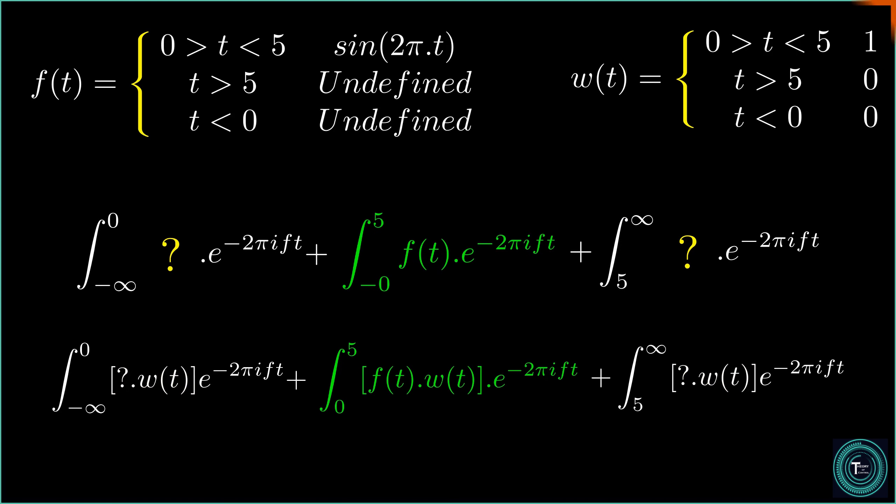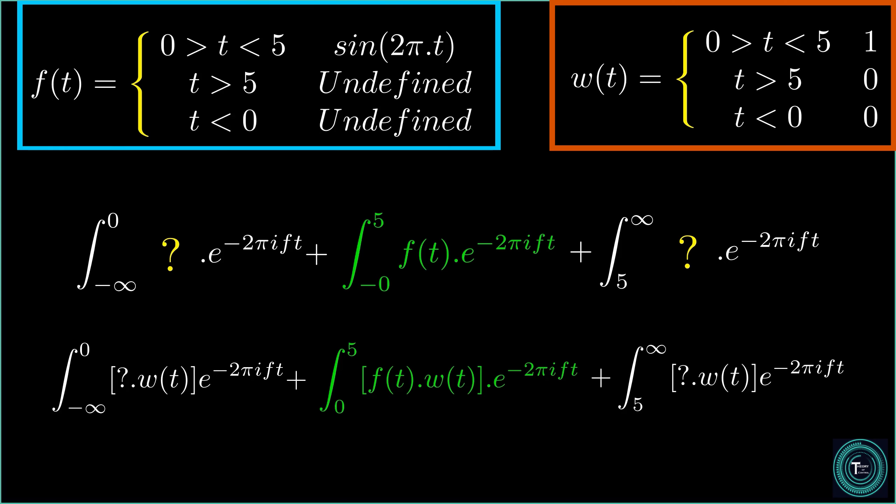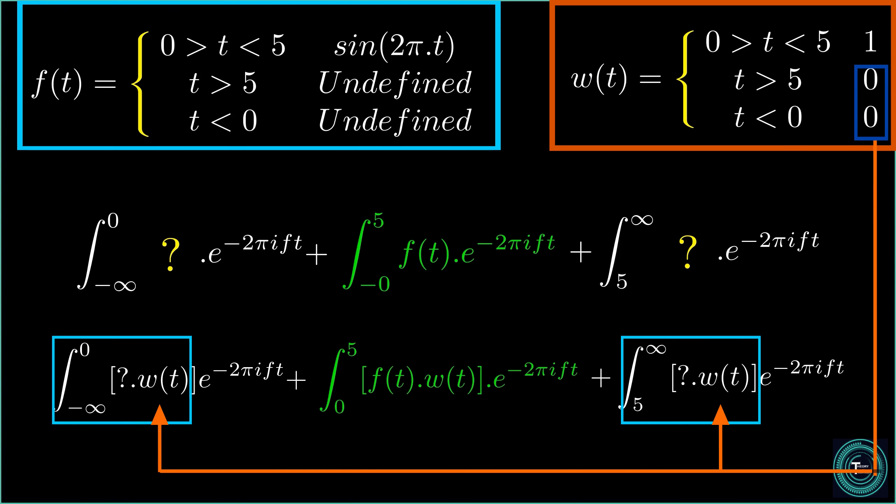Introducing a new signal, w of t, with the on-screen definition. Say if we now multiply the original signal, f of t, with the new w of t. The function f of t will continue to be sine wave between 0 and 5. However, no matter what those undefined values used to be, when multiplied by the zeros coming from w of t, they become zeros as well.